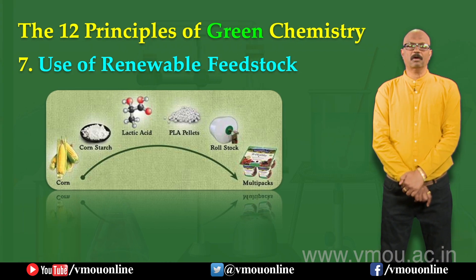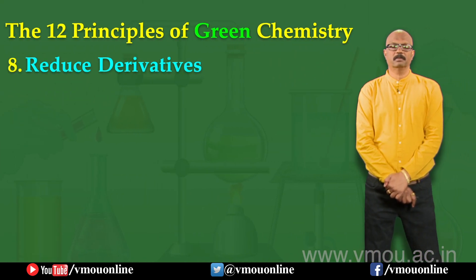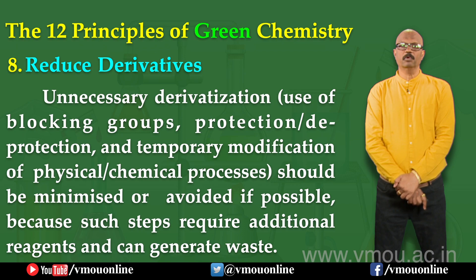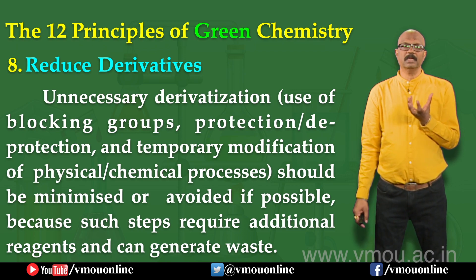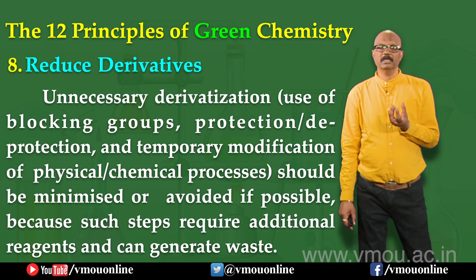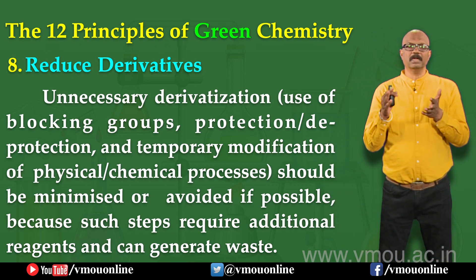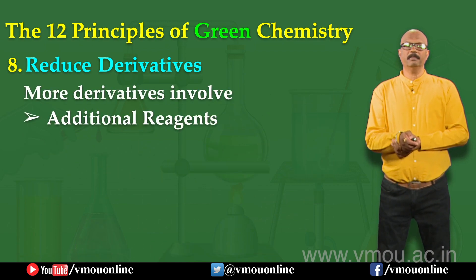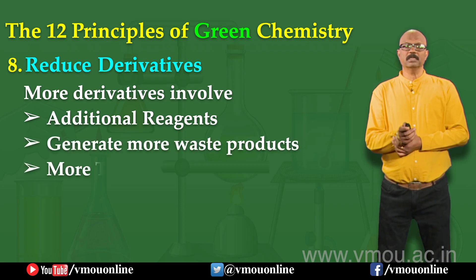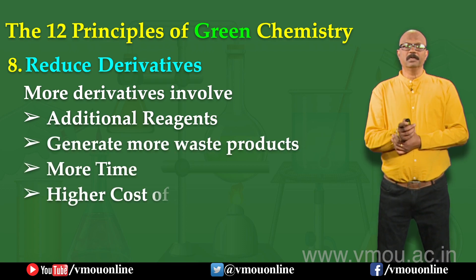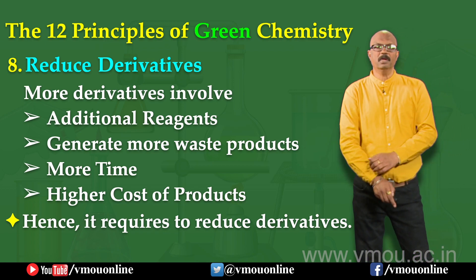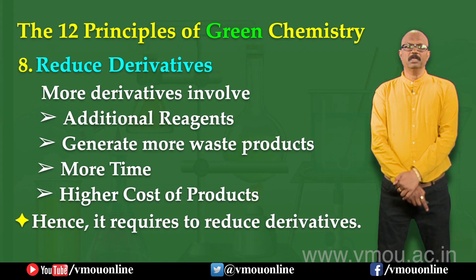The eighth principle is reduced derivatization. In organic chemistry, after making a product we often make 10, 15, 20, or 25 derivatives. Instead, we have to think about reducing derivatization and converting the whole reactant into product. Reduced derivatization helps decrease the use of additional reagents, reduces more waste products, saves time, and lowers the cost of the product.